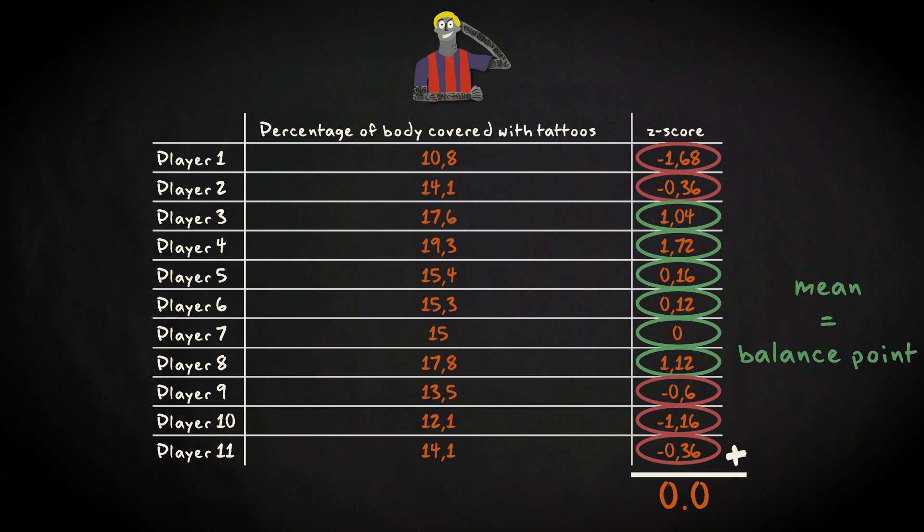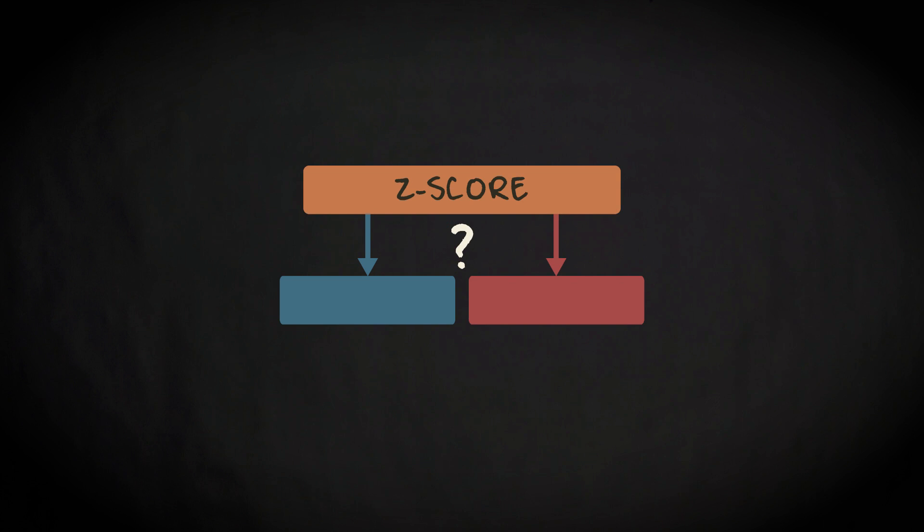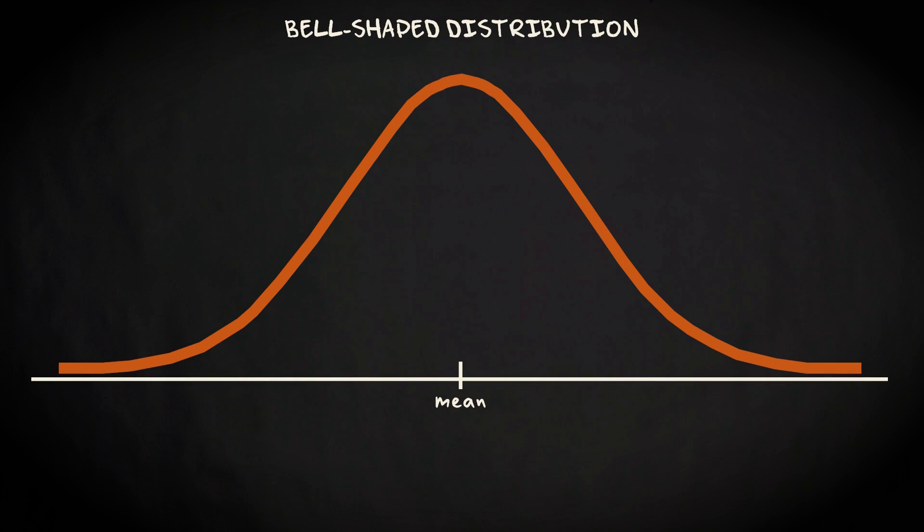Okay, that's nice. But how do you know if a certain z-score is low or high? Well, that depends on your distribution, and on context. A good rule is that if the histogram of your variable is bell-shaped,